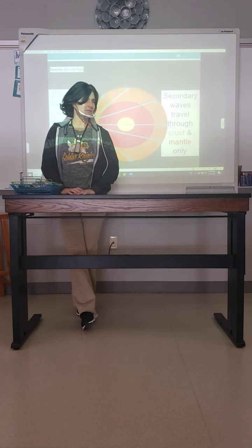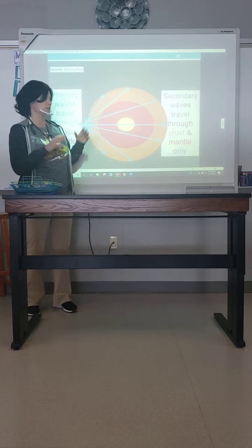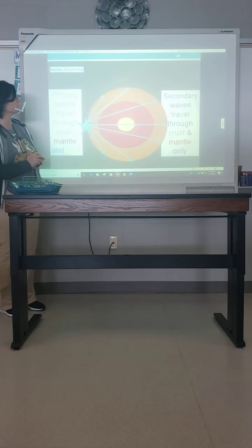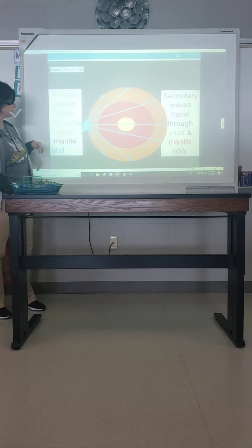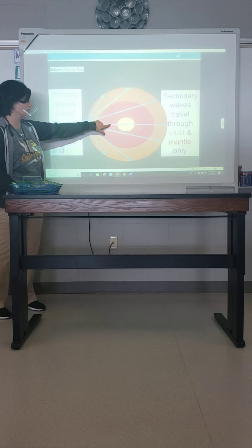And from there we'll take a look at what happens to that. So those are the major characteristics. This is talking about the primary waves — they can go through the crust, the mantle, and the core.